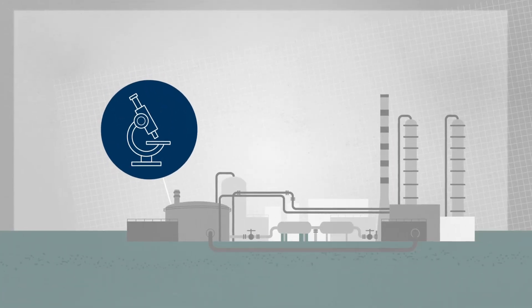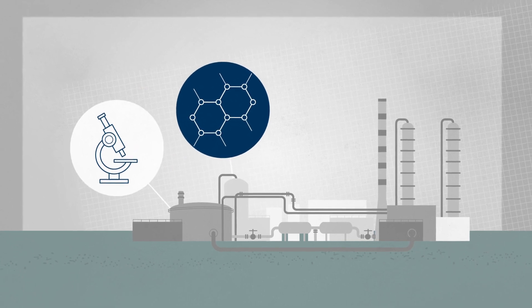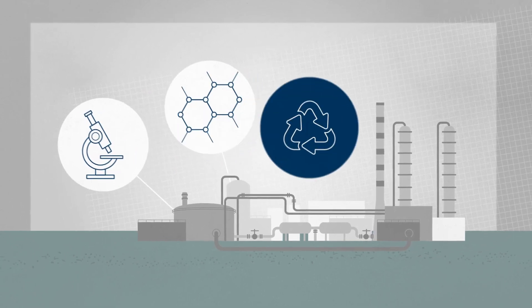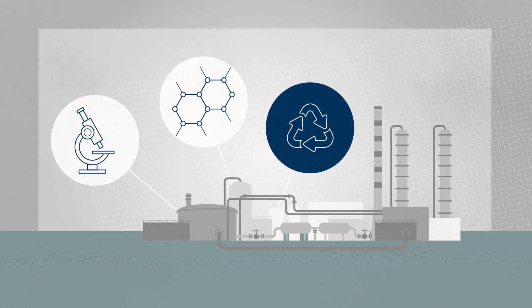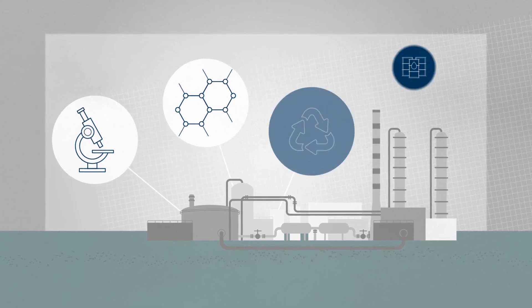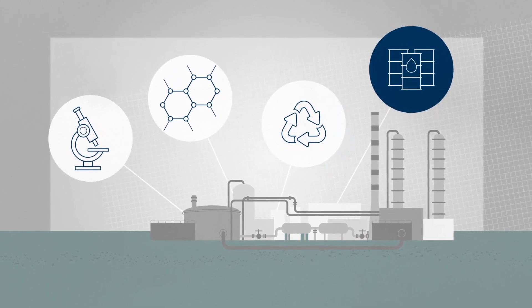Basically, a refinery is a gigantic laboratory where crude oil is broken down to its components. Environmentally harmful elements are then removed, and when the pieces are put back together, you get more efficient products that are more environmentally friendly.